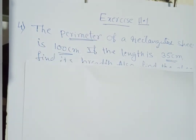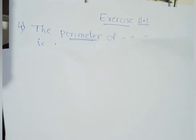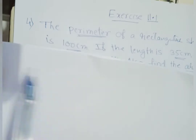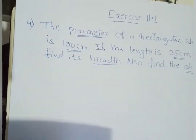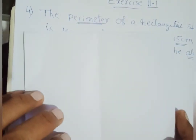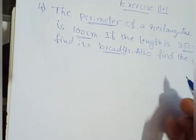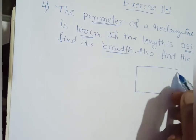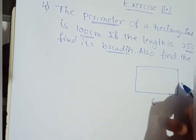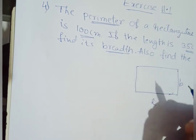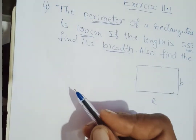For a rectangular sheet, this side is the length and this is the breadth. Suppose we have a paper — this edge is called its length and this is the breadth. Perimeter means the sum of all four sides — this side, this side, this side, and this one — which equals 100 centimeters.